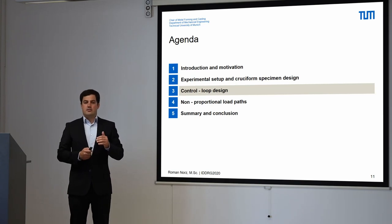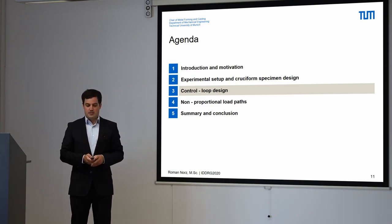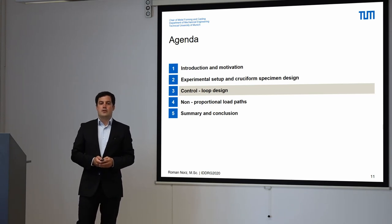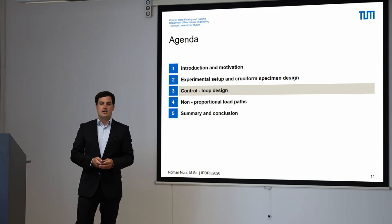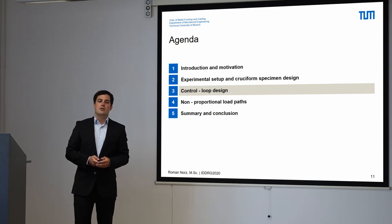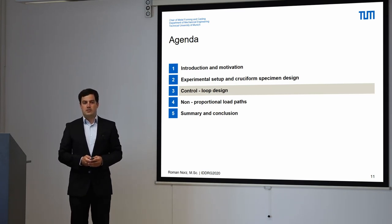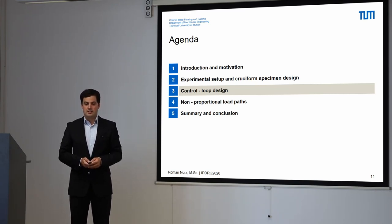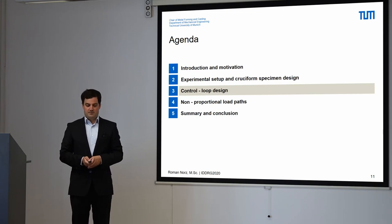We can see the strain we have reached only after the experiments. To overcome this problem, we have updated our measurement system, the ARAMIS system, so it is able to do inline measurement of strains during the experiments. We use this data obtained from the optical measurement system in a control loop approach.